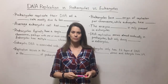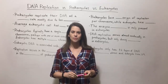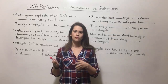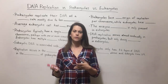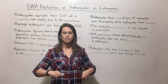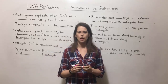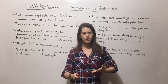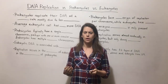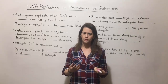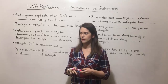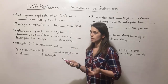Hi everyone and welcome to Biology Professor. Today we're talking about DNA replication and how it differs in prokaryotes versus eukaryotes. Remember that prokaryotes are the cell types we're talking about when we're talking about bacteria most often, whereas eukaryotes are things like animals, plants, fungi, eukaryotic parasites, algae, things like that. So let's get started.